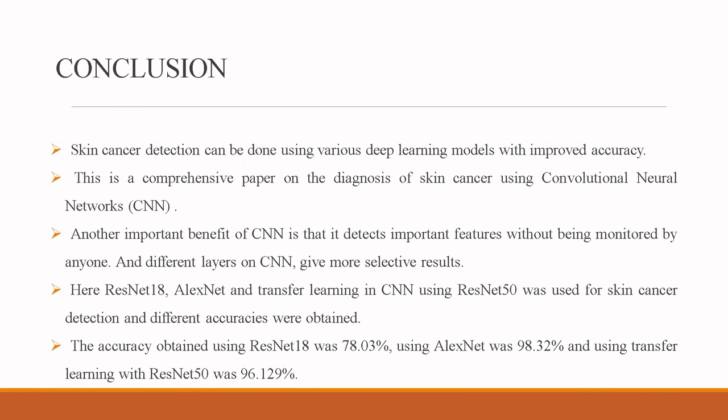In conclusion, skin cancer detection can be done using various deep learning models with improved accuracy. CNN detects important features without manual supervision, and different layers of CNN give more selective results. ResNet-18, AlexNet, and transfer learning using ResNet-50 were used for skin cancer detection. The accuracy obtained using ResNet-18 was 78.03%, using AlexNet was 98.32%, and using transfer learning with ResNet-50 was 96.129%.